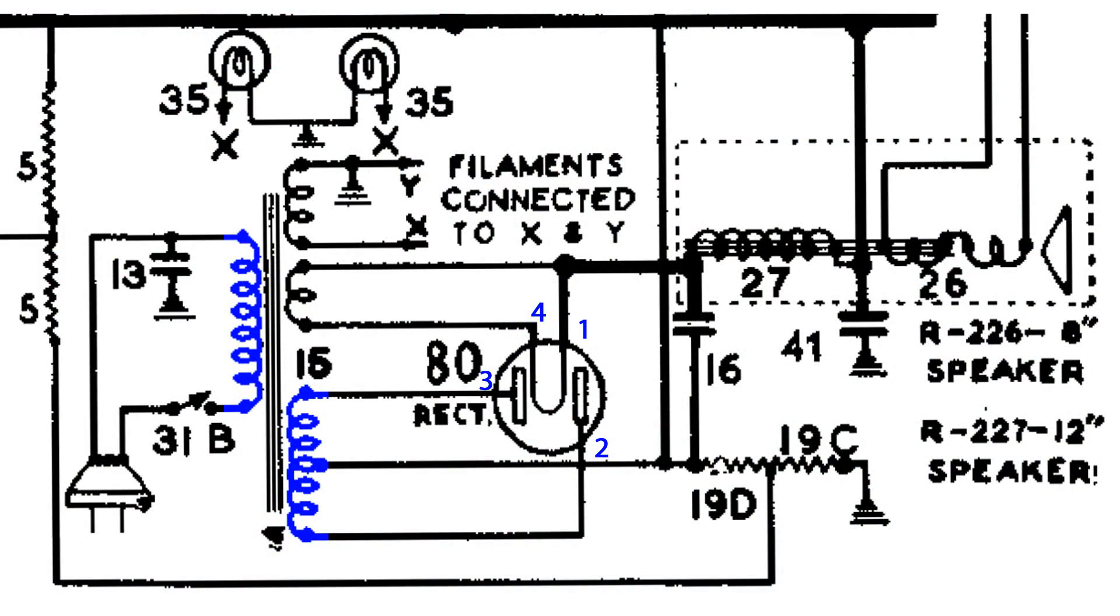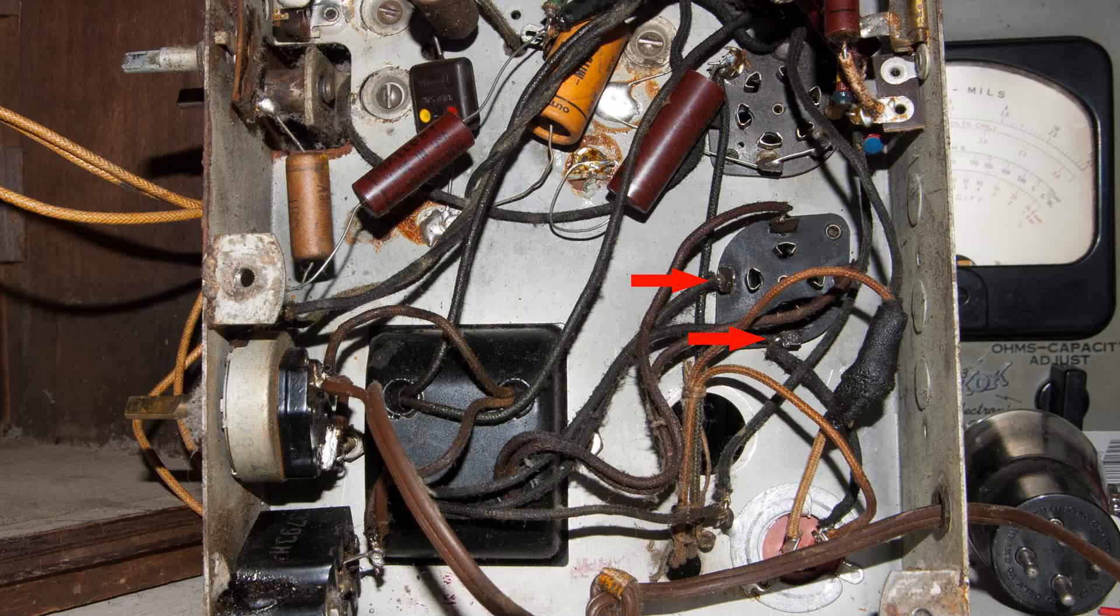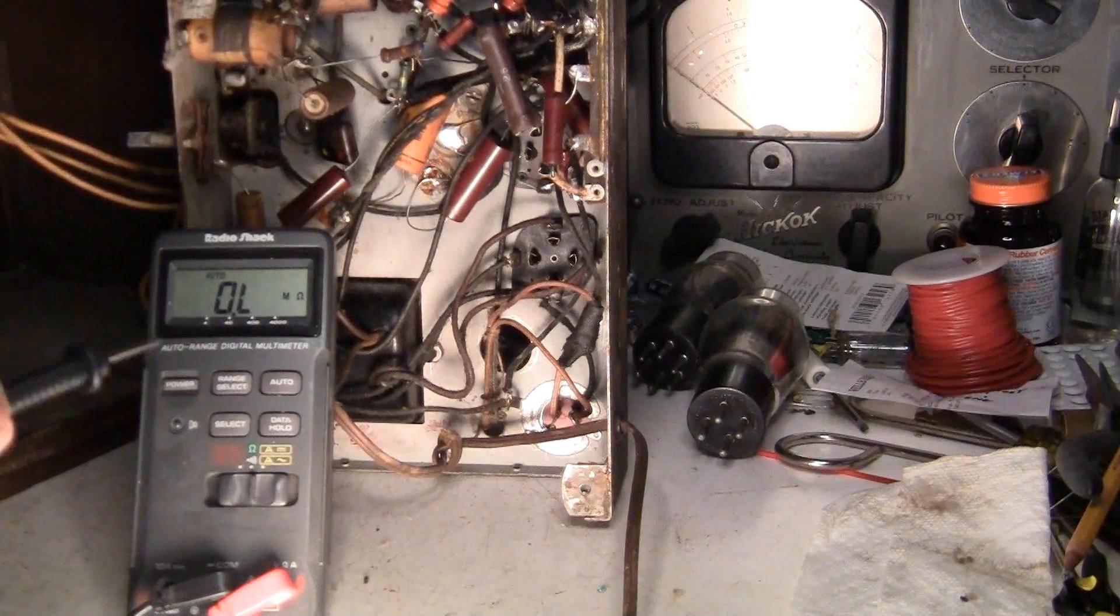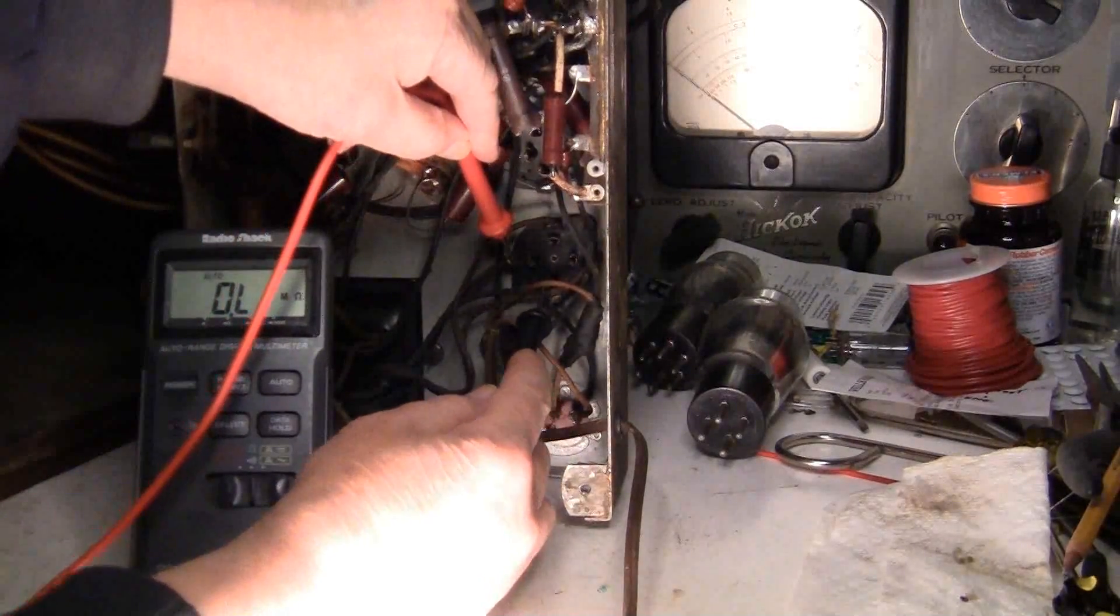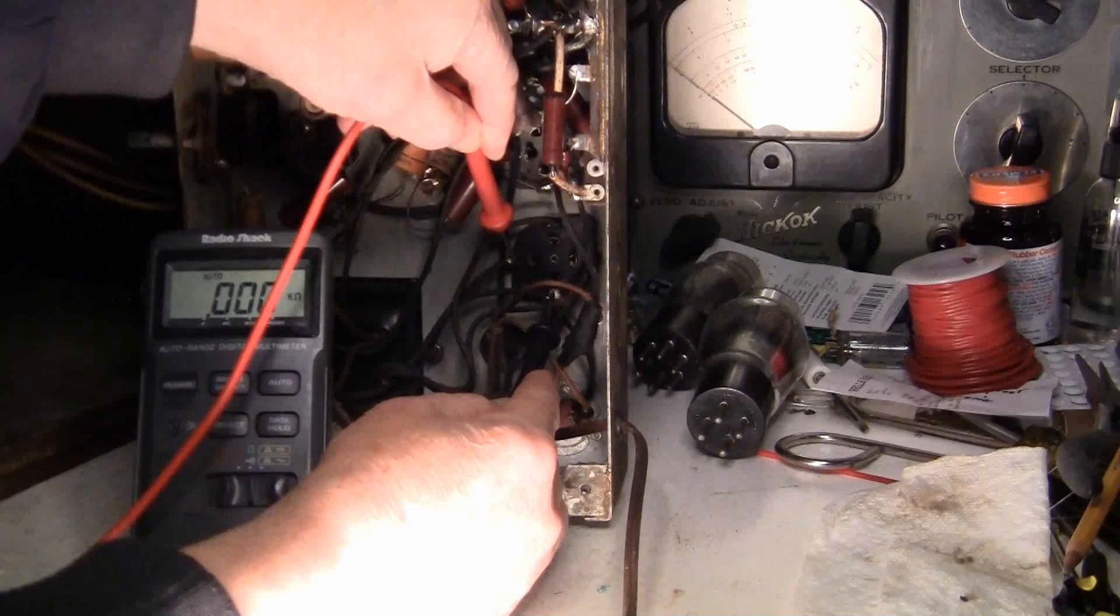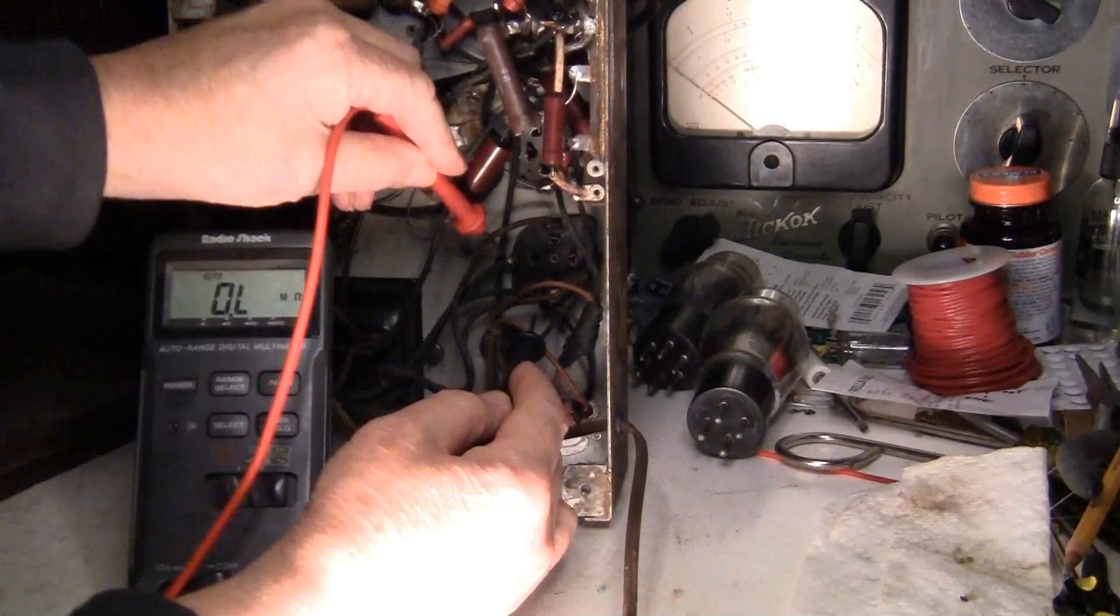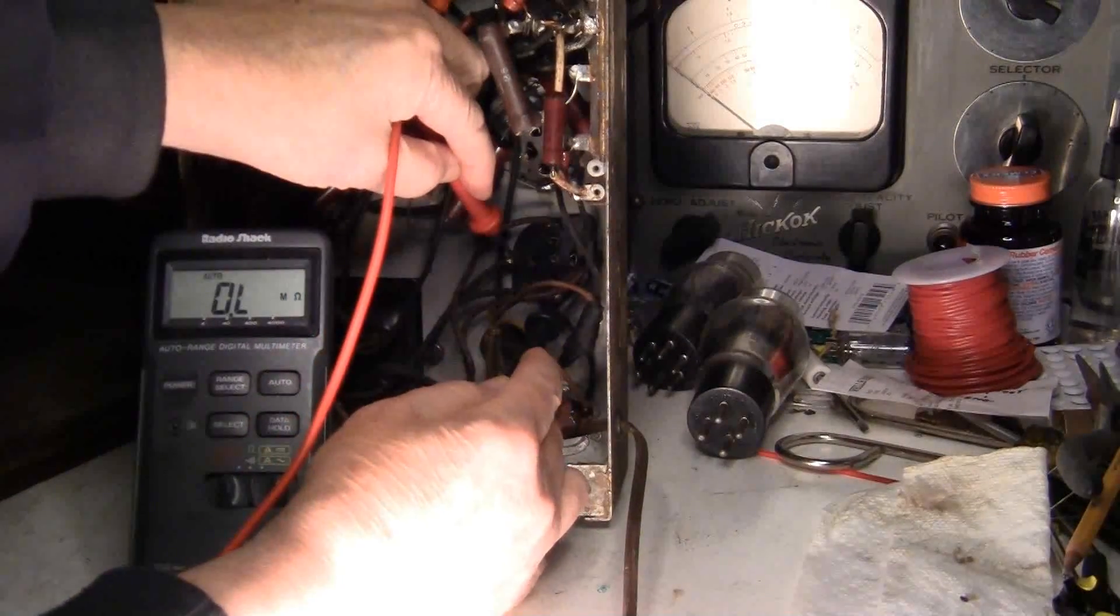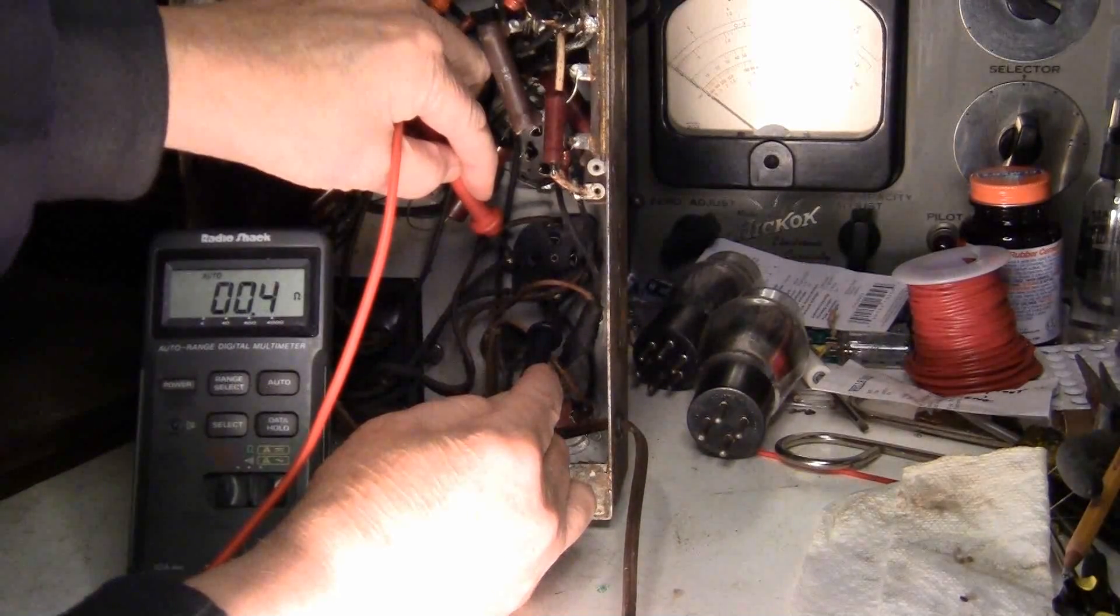Now I'm going to check the filament coil that goes to the 80 tube. Here are the test points one and four. Now I'm going to read between one and four on the 80 tube. It should be about 0.5 ohms, something like that, so I can get a better connection here.